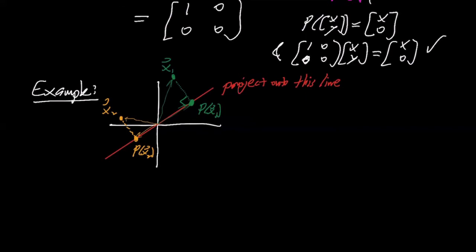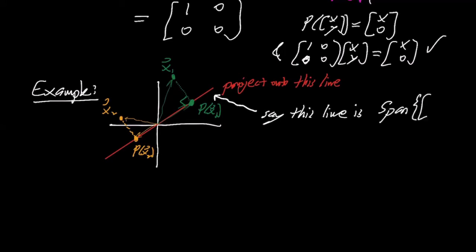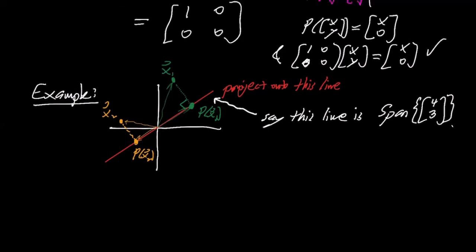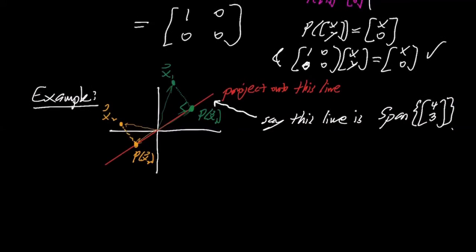Let's pick a specific line. In linear algebra we can specify a line as a span, so say this line is the span of the vector four comma three. That's a slope a bit less than 45 degrees. The question is: what's the formula and what's the matrix for this projection?